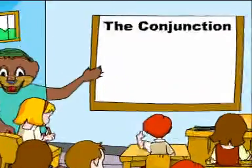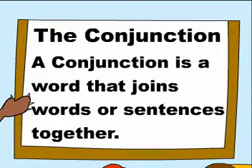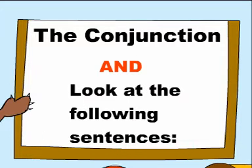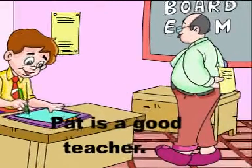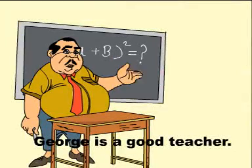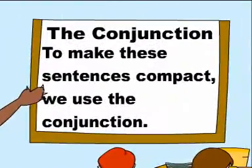A conjunction is a word that joins words or sentences together. For example: and, that, as well as. Look at the following sentences: Pat is a good teacher. George is a good teacher.